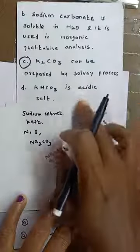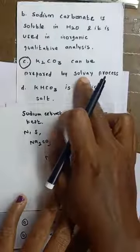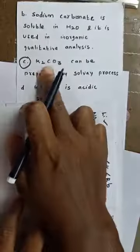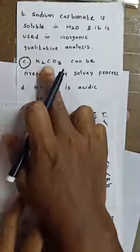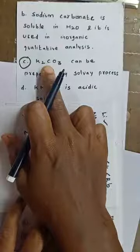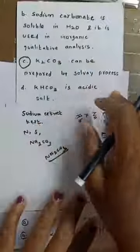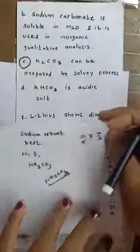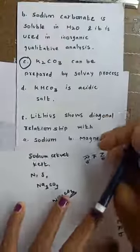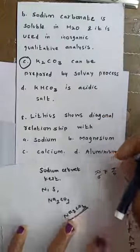Among all options, option C is the wrong statement because the Solvay process prepares sodium carbonate, not potassium carbonate. So option C is the correct answer.